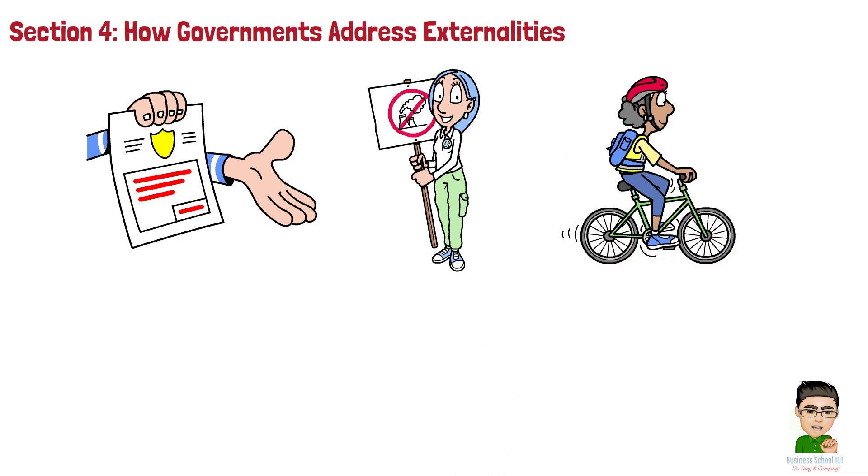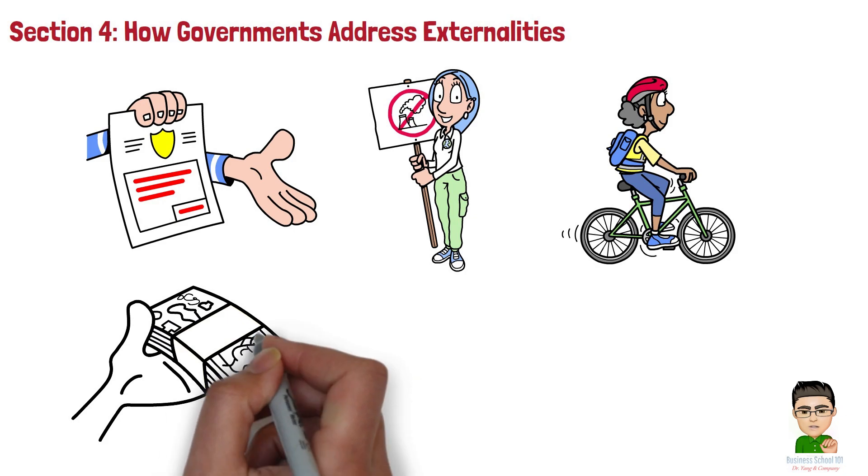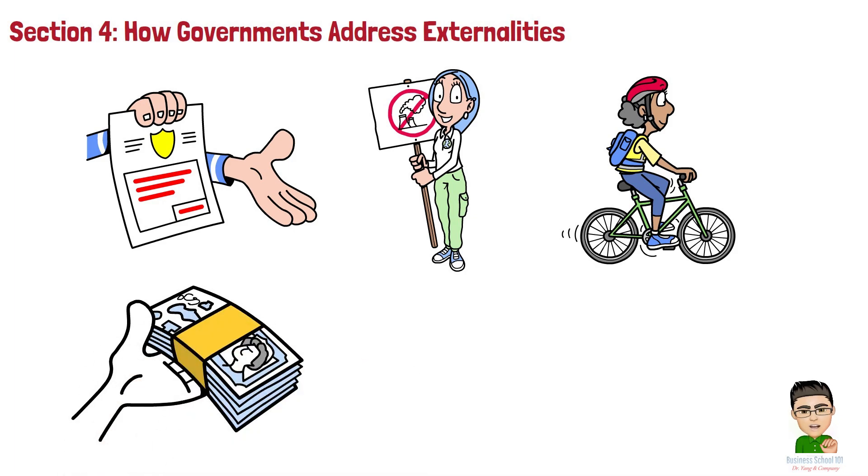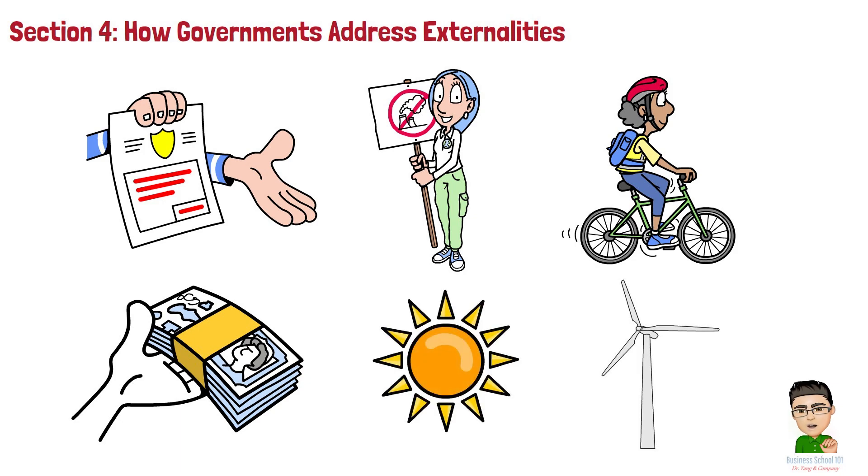For positive externalities, governments can offer subsidies or other incentives. For instance, governments often subsidize renewable energy sources like solar and wind power, since they provide societal benefits by reducing pollution and dependence on fossil fuels.